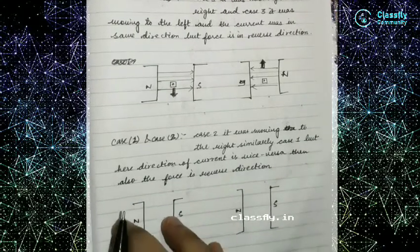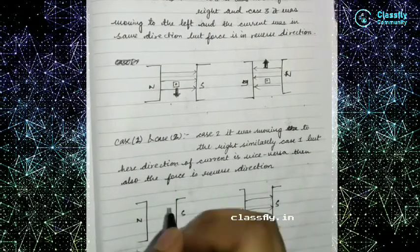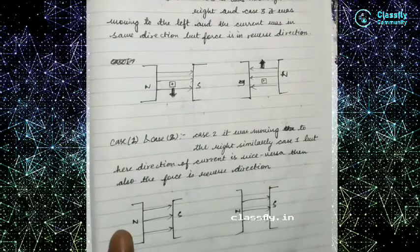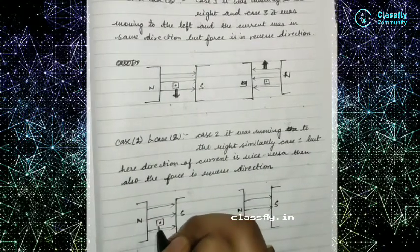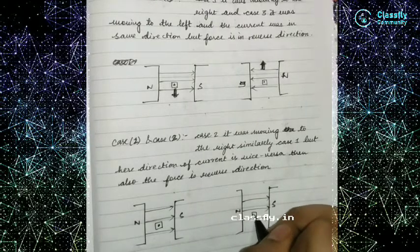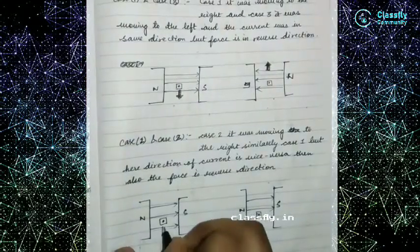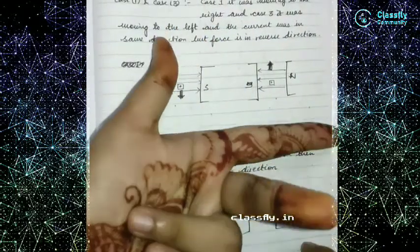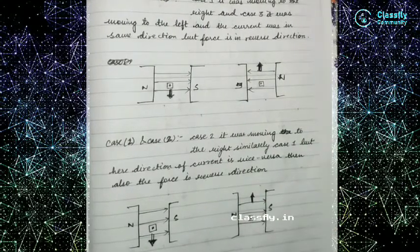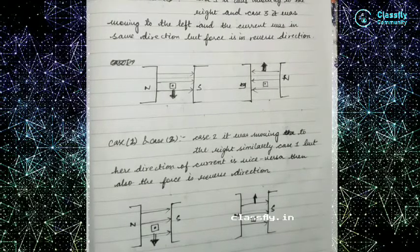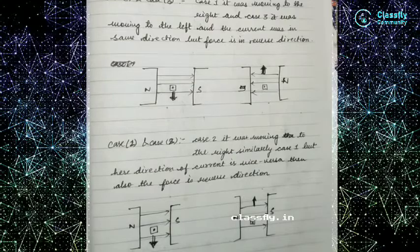For Case 2, the field moves north to south and the current is outside the paper, giving a force direction opposite to Case 1. Today's lecture covered: what is a DC motor, how it works, what its principle is, and how we can reverse the direction of rotation. I hope you all understood — be happy and have a great day.